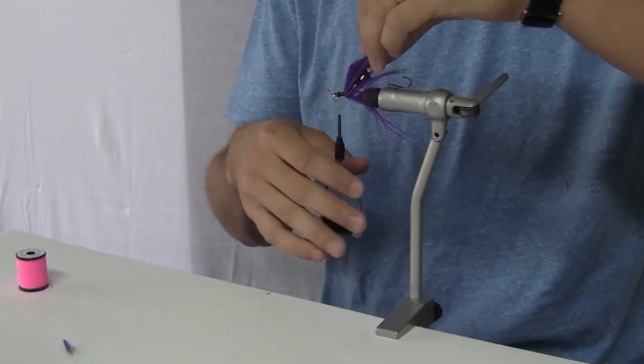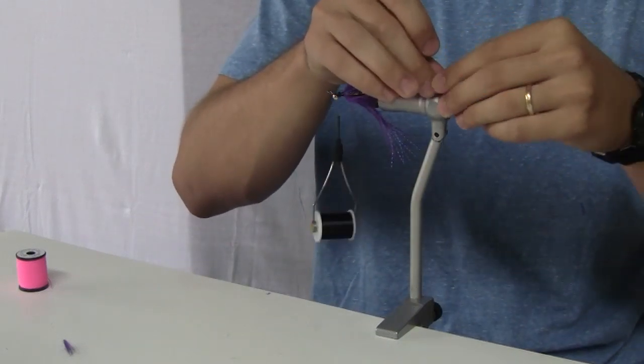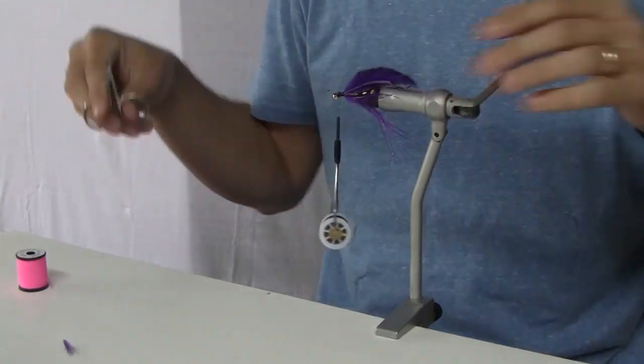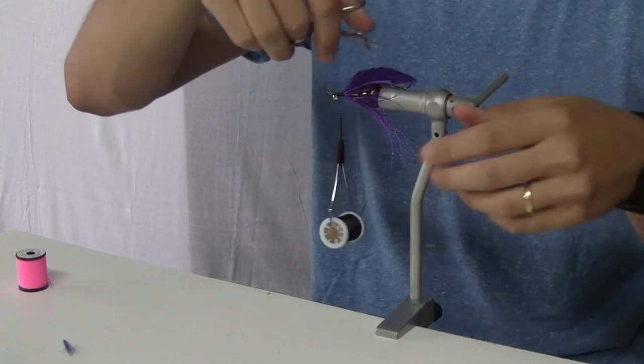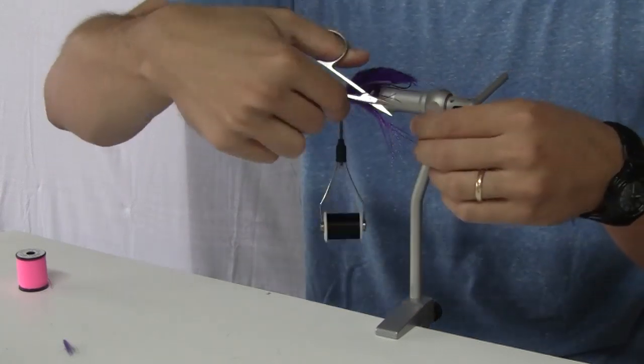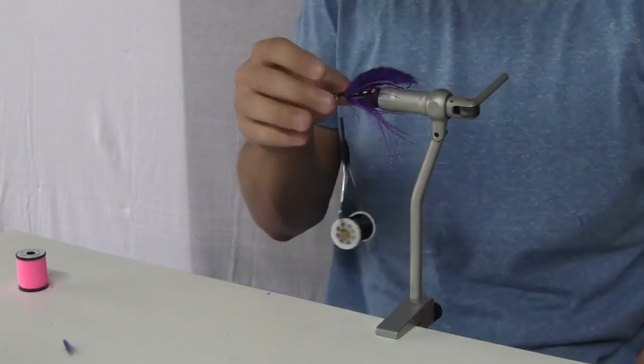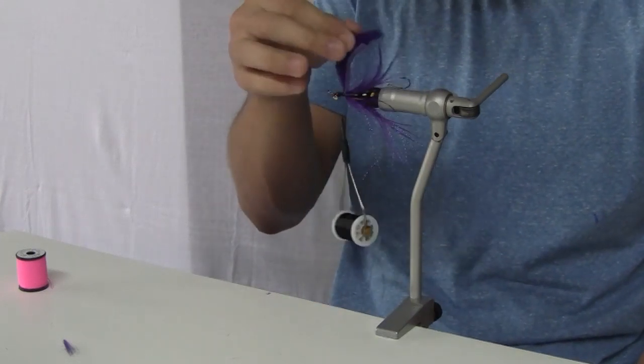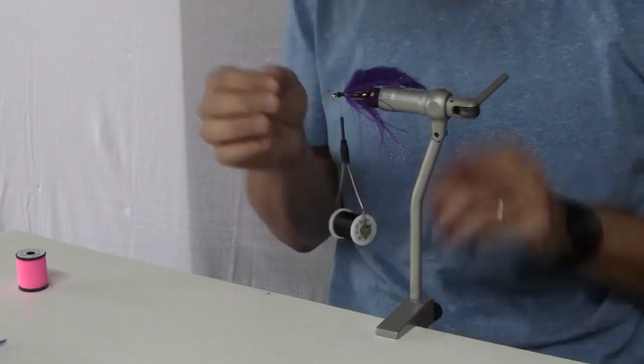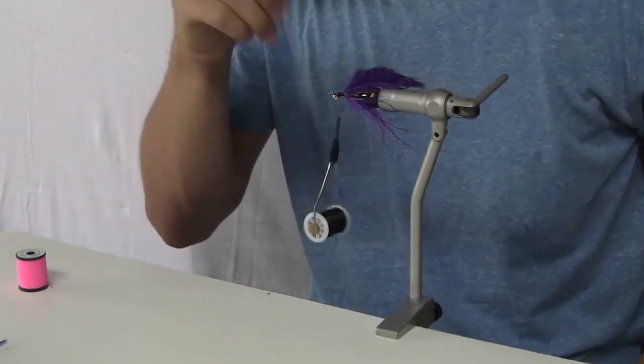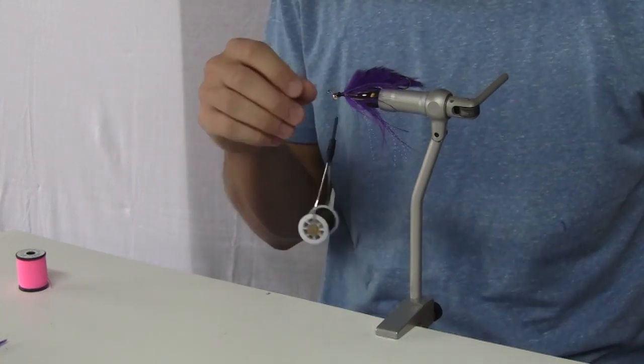We'll pull those fibers back, trim, and we can clean up all the flash at the end if it doesn't line up correctly. So now we kind of have that built and you can see it's getting pretty buggy, pretty full. The next thing that we're going to do is actually get out, which I already have prepared, our petogen clamp with some crosscut rabbit adhered to it.